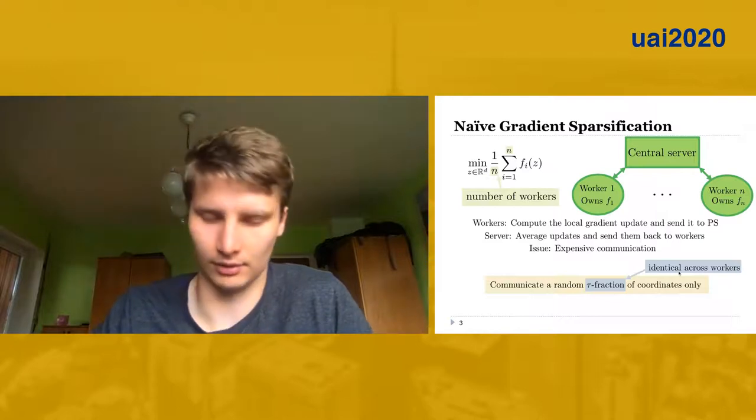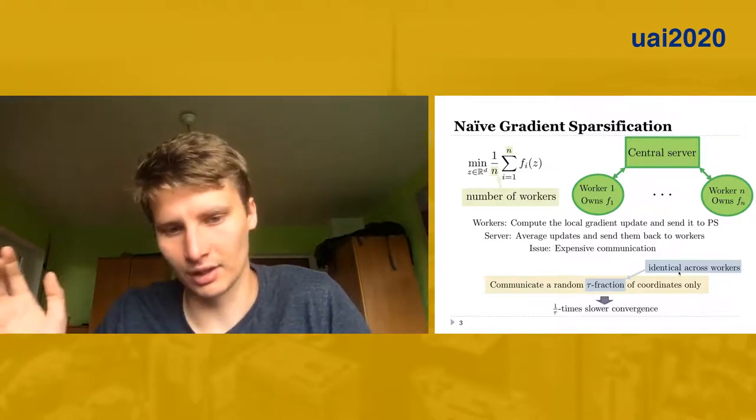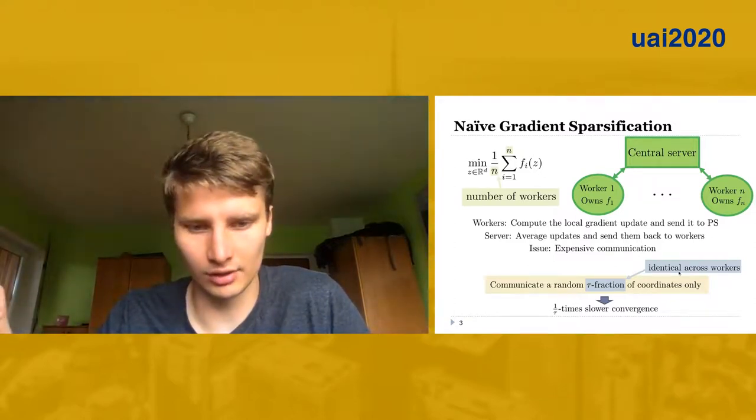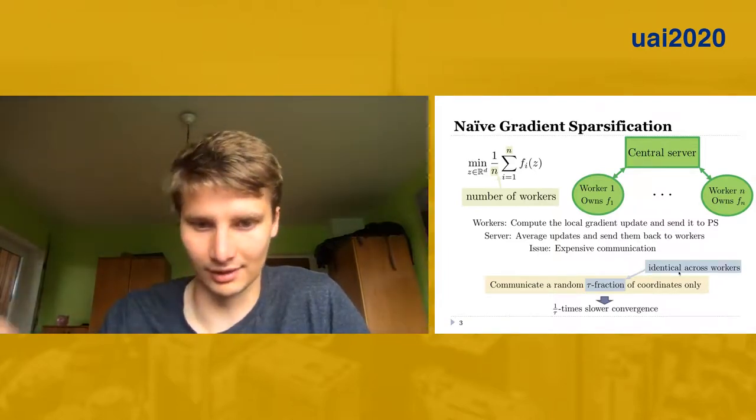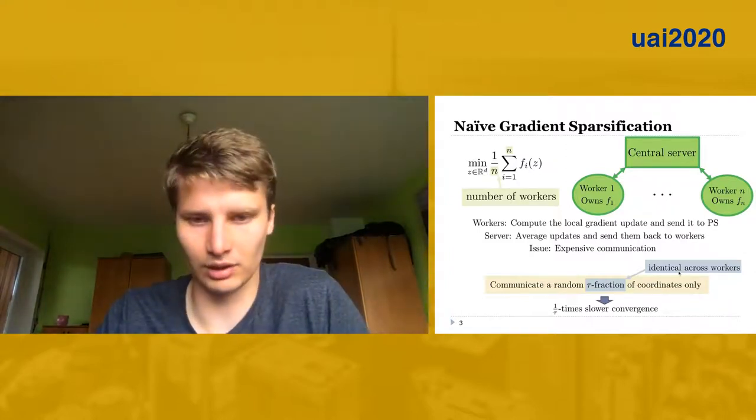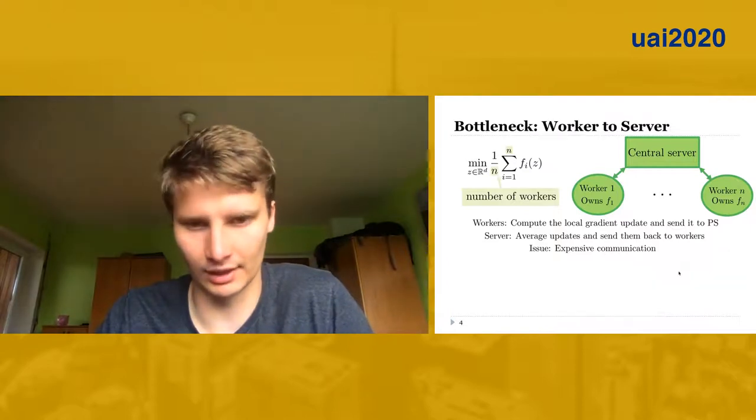Even after the server averages those updates, it will also be sparse, and then the server sends back the sparse vector. However, it turns out that this naive way is hurting the convergence quite significantly—the smaller tau is, the slower the convergence is.